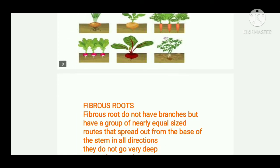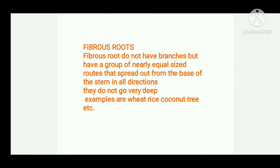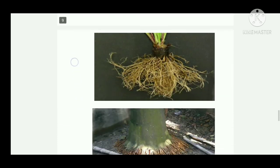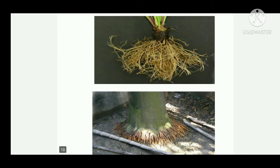Next are fibrous roots. Fibrous roots do not have branches but have a group of nearly equal-sized roots that spread out from the base of the stem in all directions. They do not go very deep. Examples are wheat, rice, coconut tree, etc. You can see some examples of fibrous roots — they look like fibers or ropes. They are very thin and usually start from the tip of the stem and spread out like small threads.